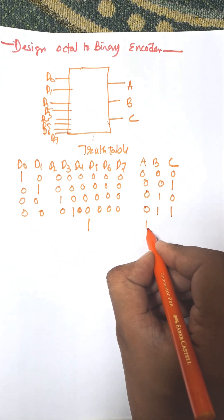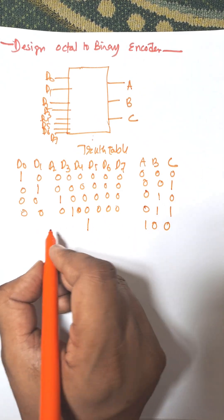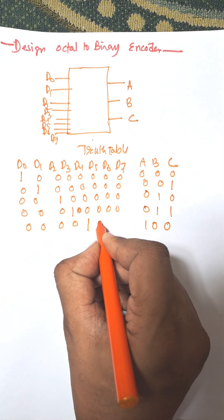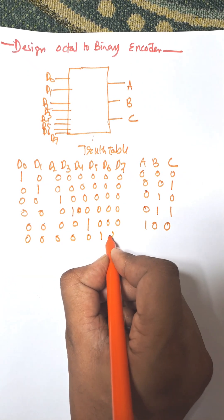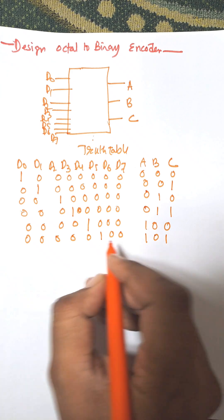When you press d4, the equivalent binary is 1, 0, 0. Remaining all are 0. When you press d5, the equivalent binary is 1, 0, 1.